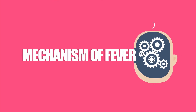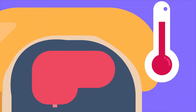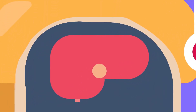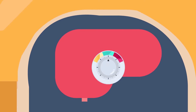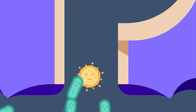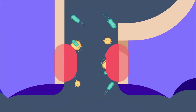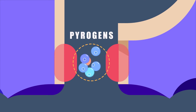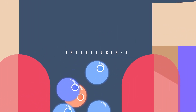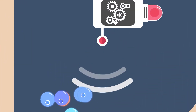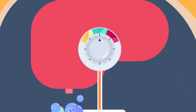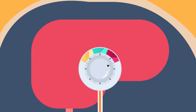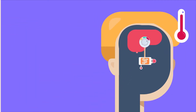Body temperature is usually set to its normal range by the hypothalamus, which acts as a thermostat. When the body suffers from certain pathological processes — namely inflammation — certain chemicals are released collectively called pyrogens, one of which is interleukin-2. Pyrogens set the thermoregulatory point of the hypothalamus to a higher temperature, thus resulting in fever.